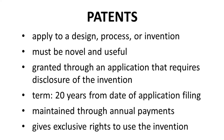Once granted, a patent has a 20-year lifespan from the date it was filed, as long as the patent holder makes an annual payment to maintain the patent. In return for disclosing the invention, the patent holder can prevent anyone else from using the invention. So the patent holder essentially has a temporary monopoly to the invention, and the inventor benefits by disclosing the invention to the general public.